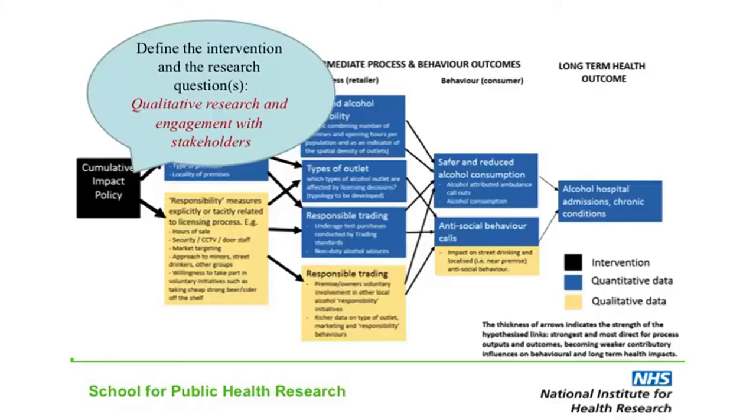You can see a thought bubble over the first box that says: define the intervention and the research question. This is about really understanding what cumulative impact policy actually is — one of those interventions that seems to be delivered and thought about differently by different people who deliver it. So the first thing we did was talk to people delivering cumulative impact policies in different parts of the country and get an idea of what the intervention is and what different people thought it was there to achieve.